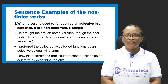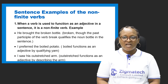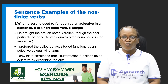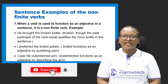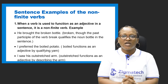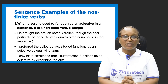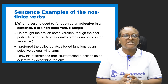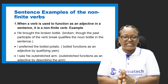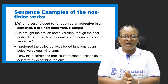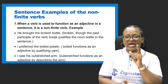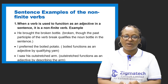Now let's look at examples of non-finite verbs. When a verb is used to function as an adjective rather than a verb, it is non-finite. Adjectives are words that describe nouns and pronouns. If a verb word is describing a noun or pronoun in a sentence, we refer to that verb word as non-finite.